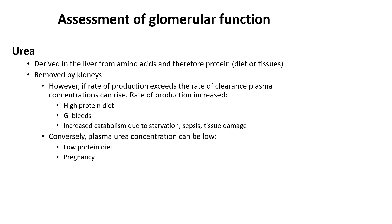Looking at urea: this is derived in the liver from amino acids and therefore protein, and it is removed by the kidneys. However, if the rate of production exceeds the rate of clearance, plasma concentrations can rise. The rate of production is increased by a high protein diet, GI bleeds, and increased metabolism due to starvation, sepsis, and tissue damage. Conversely, plasma urea can be low due to a low protein diet or pregnancy.